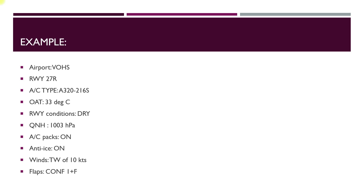I have taken an example of Hyderabad Airport runway 27R, aircraft type A320-216 Sharklet series, outside air temperature 33 degrees centigrade, runway conditions dry, QNH 1003 hPa, air conditioning is on, anti-ice is on, and we are getting tailwinds of 10 knots.